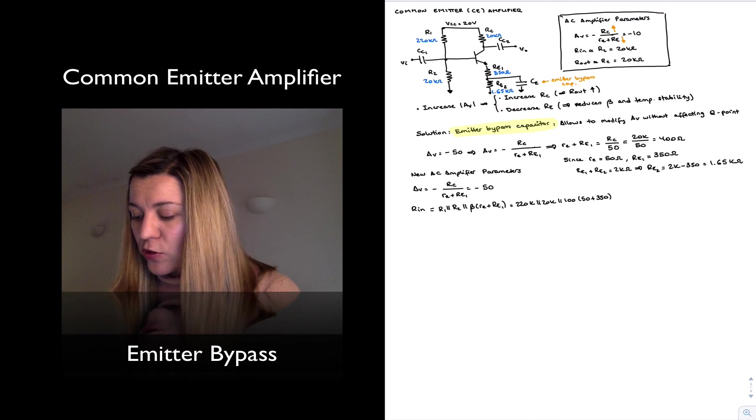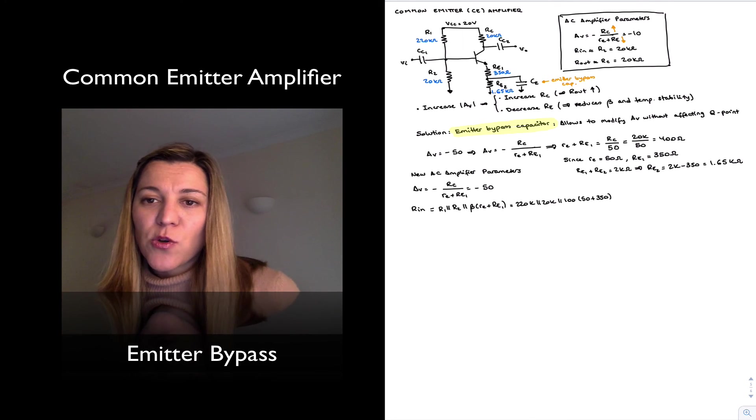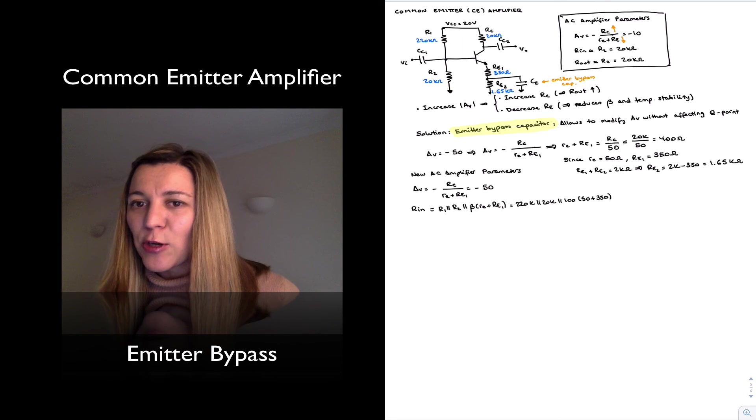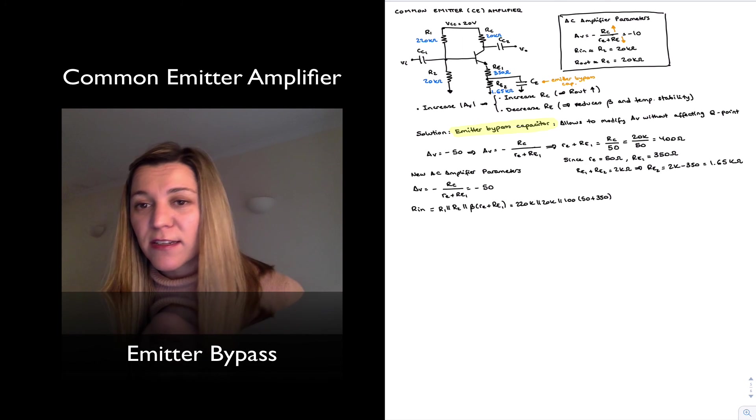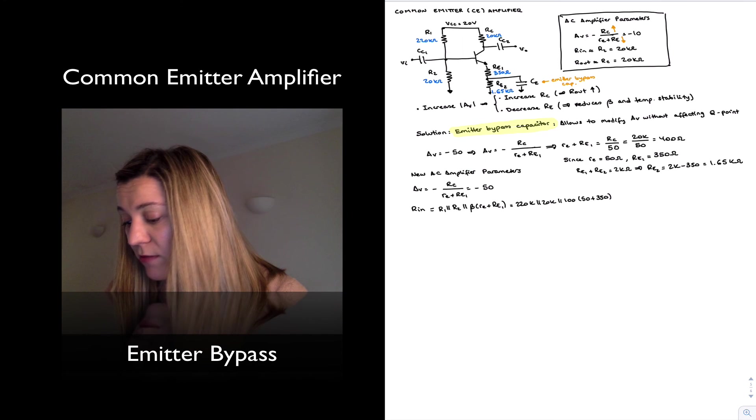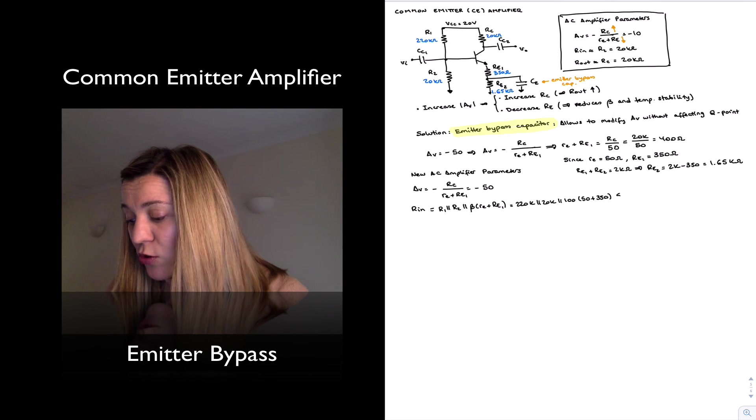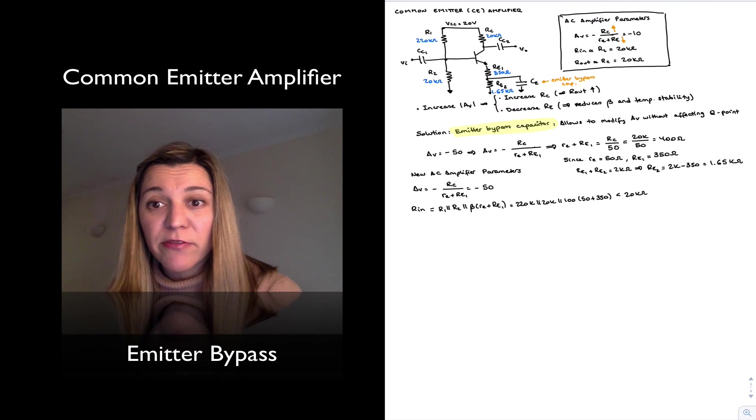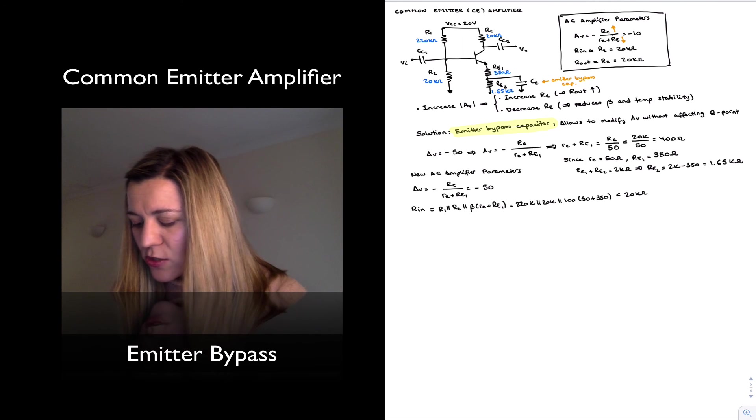So this has gone down. Before it used to be 220K in parallel with 20K in parallel with 200K, and now it's 220 in parallel with 20 in parallel with 40. So R2 is no longer much smaller than the input resistance looking into the base. And so the actual input resistance has gone down. It's lower than the 20K that we had approximately before. So R in has gone down. That's a trade-off.